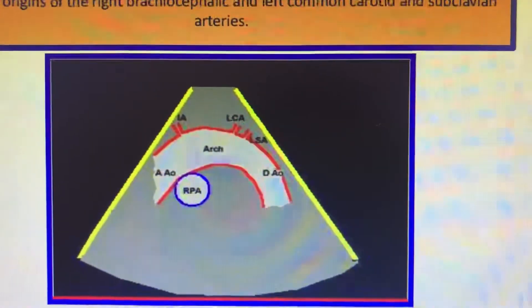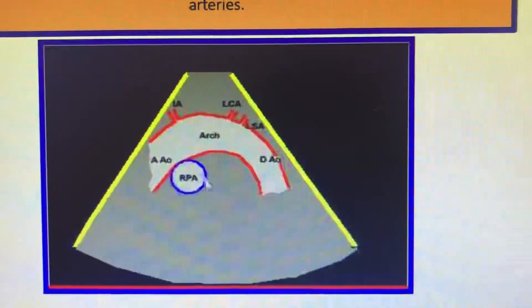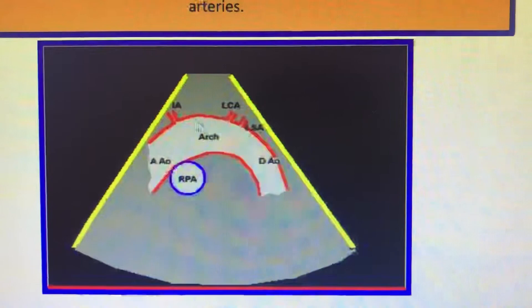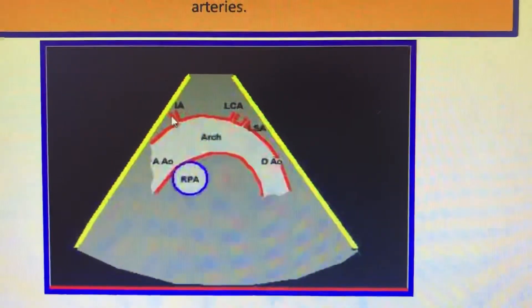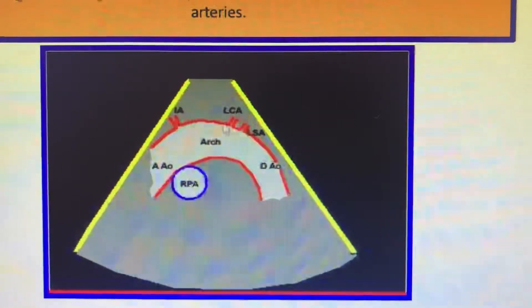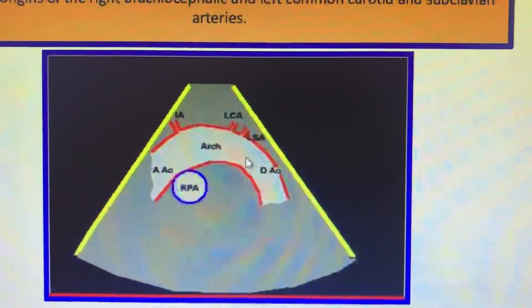This is the suprasternal view, one of the notch positions. You are seeing the right pulmonary artery, and the arch is seen very well, with the left subclavian, right subclavian, left common carotid, and right common carotid arteries being seen going away from the arch in this view.